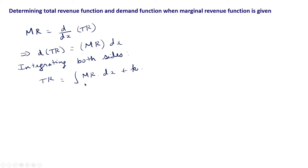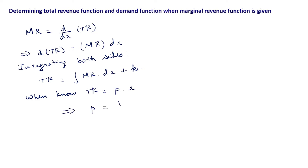For the marginal revenue function, we can find the integral based on the various methods we have studied in integration. To find the demand function, we know total revenue is price per unit into the number of units produced. From this, the demand function is total revenue divided by x. This is how we find the total revenue function and the demand function when the marginal revenue function is given.